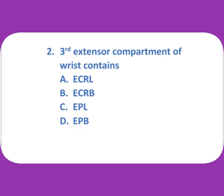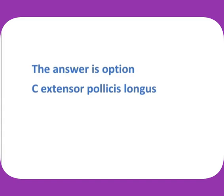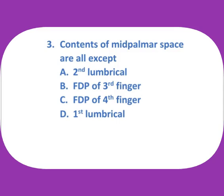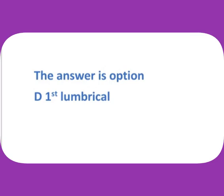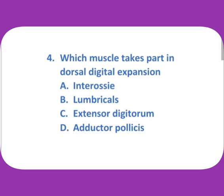Third extensor compartment of the wrist contains — (a) ECRL, (b) ECRB, (c) EPL, (d) EPB. The answer is option C: extensor pollicis longus. Contents of mid palmar space are all except — (a) second lumbrical, (b) FDP of third finger, (c) FDP of fourth finger, (d) first lumbrical.